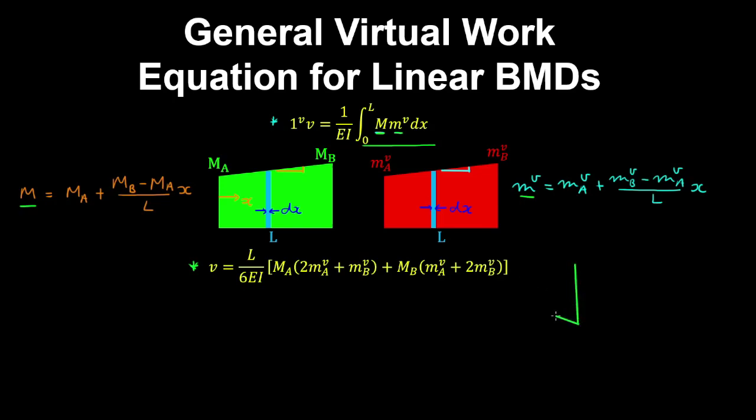So for example, this might look something like this. So this here is ma, and this here is mb. And similarly for the virtual bending moment diagram, it looks something like this. So you have ma virtual and mb virtual. And these bending moment diagrams have a length l, so the volume between these diagrams is given by this equation.